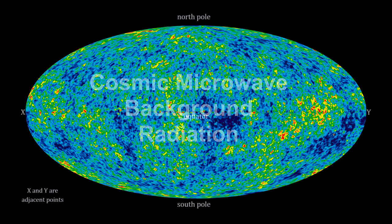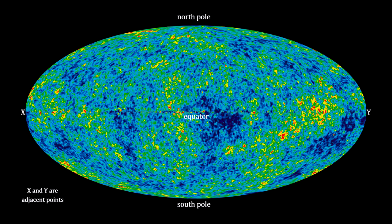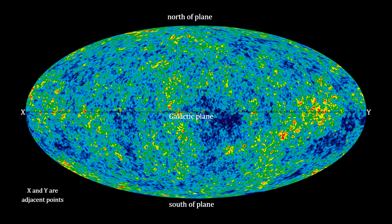Here's a projection of the celestial dome, as seen by the Wilkinson Microwave Anisotropy Probe, factoring out all local and local group motion.